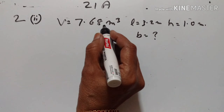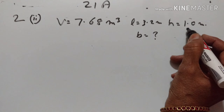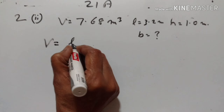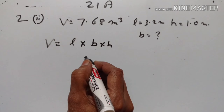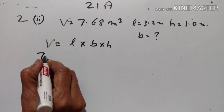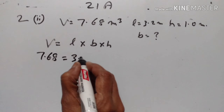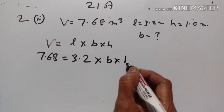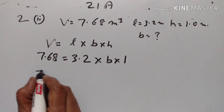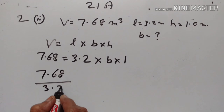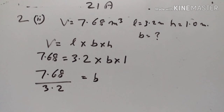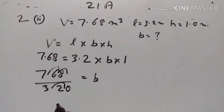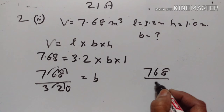Here volume is given as 7.68 m³, length = 3.2 m, height = 1.0 m. We have to find the breadth. Volume = length × breadth × height, so 7.68 = 3.2 × breadth × 1. Therefore breadth = 7.68 ÷ 3.20.